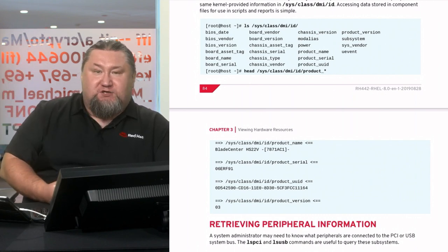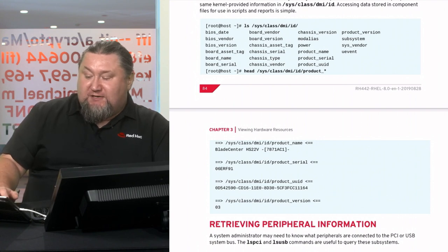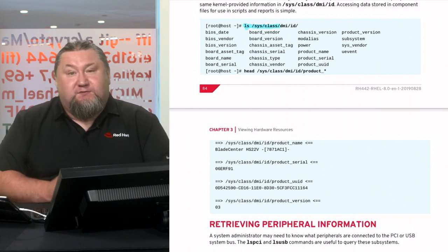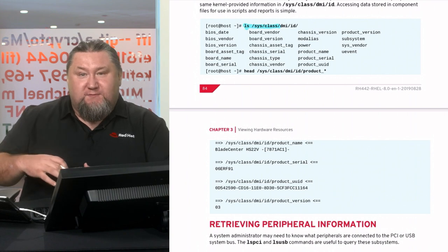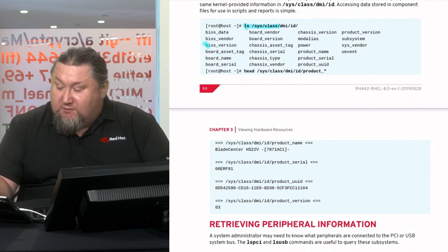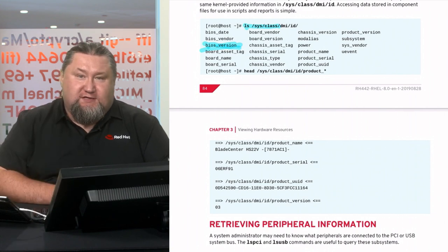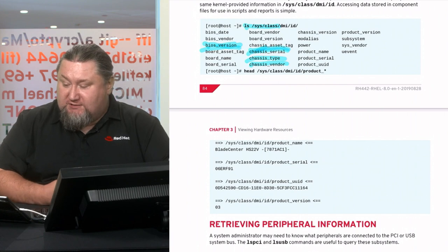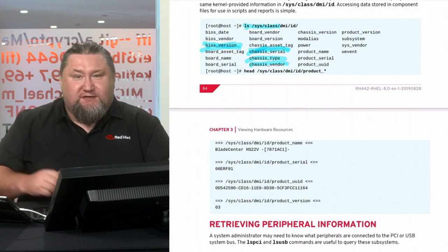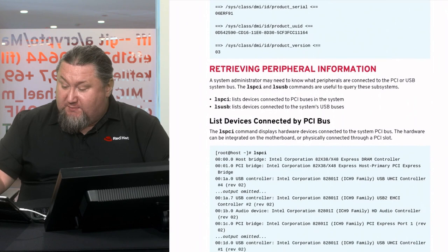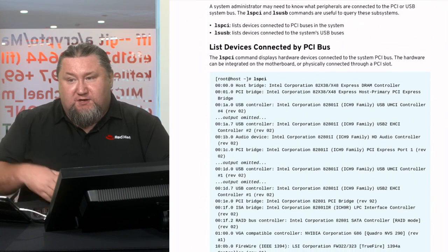The same information provided by dmidecode is also accessible via the `/sys/class/dmi` directory. Inside you'll find subdirectories and files representing small portions of the information. For example, there's a file called `bios_version`, and you can `cat` it to get the value. Similarly `chassis_serial`, `chassis_type`, and `chassis_vendor` are all available as pseudo-filesystem files.